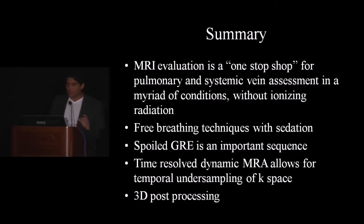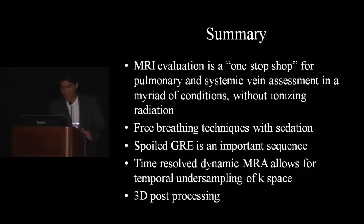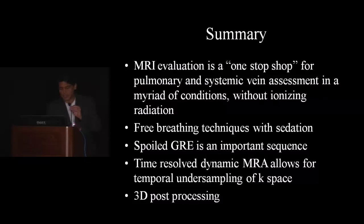In summary, MR functions as a one-stop shop for pulmonary and systemic vein assessment across a myriad of conditions without ionizing radiation. As part of the protocol, black blood images combined with bright blood sequences — particularly the spoiled GRE axial stack — are very helpful for pulmonary venous anatomy. Phase contrast imaging combined with time-resolved dynamic MRA allows good temporal undersampling of k-space and examination of finer details of the pulmonary and systemic veins. 3D post-processing is key to demonstrating findings.